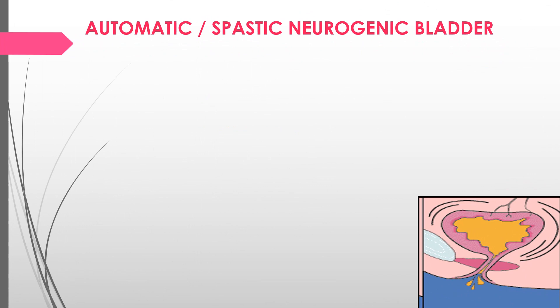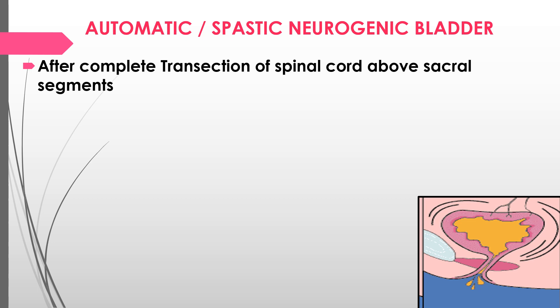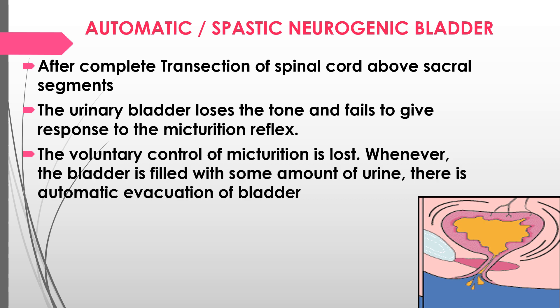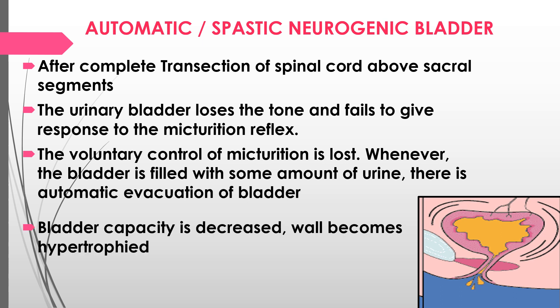The automatic (spastic neurogenic) bladder results from complete transection of the spinal cord above the sacral segment. The urinary bladder loses tone and fails to respond to the micturition reflex, with loss of voluntary control. Whenever the bladder fills with some urine, it is automatically evacuated. Bladder capacity decreases, the wall becomes hypertrophied, and overflow incontinence occurs.